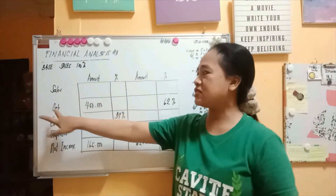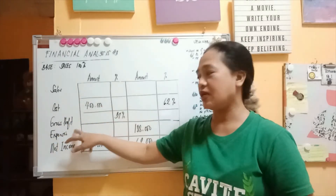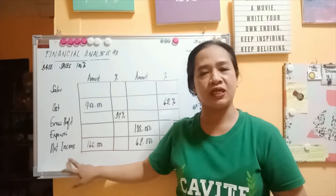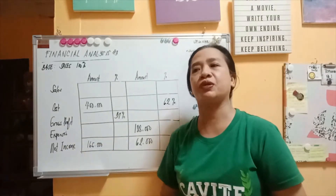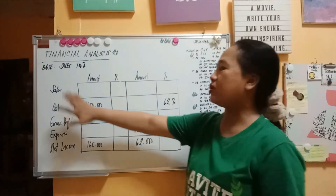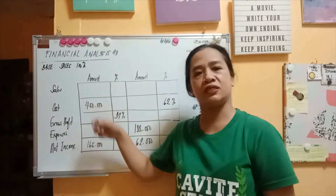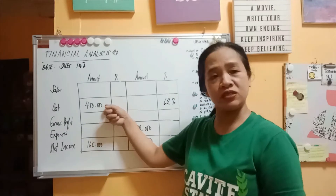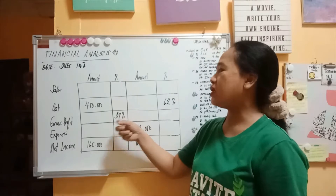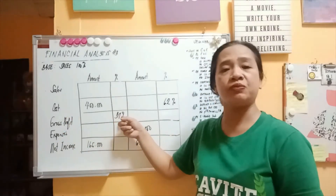Here in the problem, we have sales minus the cost, which equals gross profit. Then we have the expenses, and then we get the amount of net income. Our example is a sole proprietorship and partnership. In this given situation, the only given amount is cost and the amount of net income. The given percentage is only the percentage of gross profit, which is 37%.